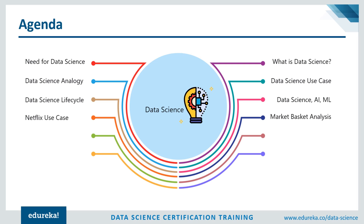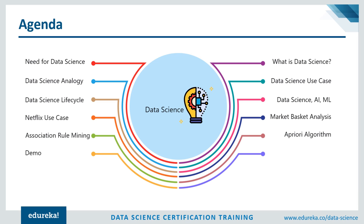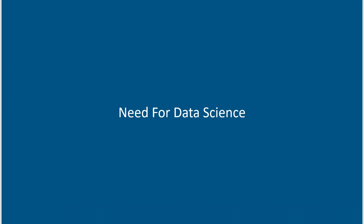We'll discuss how Netflix uses data science to become a billion dollar website, look at market basket analysis and how local retail shops gain useful insights about customer buying habits. We'll discuss association rule mining and the a priori algorithm, and then move on to a demo showing how to increase sales of a retail shop by analyzing customer shopping behavior. Finally, I'll wind up with some facts about data science.